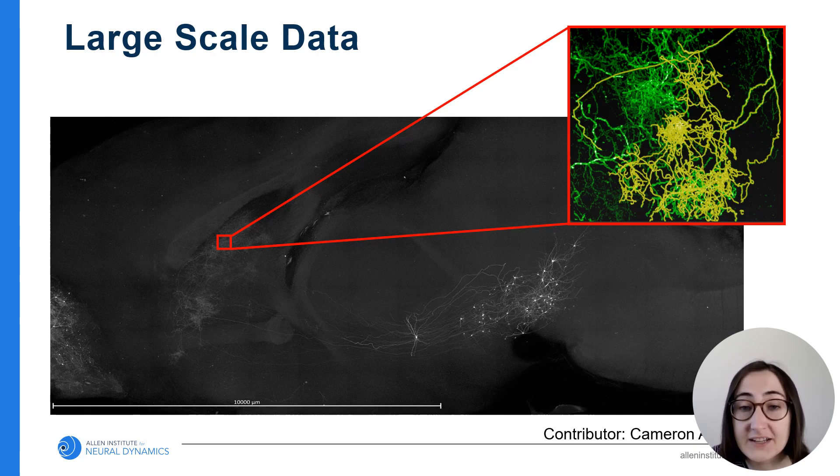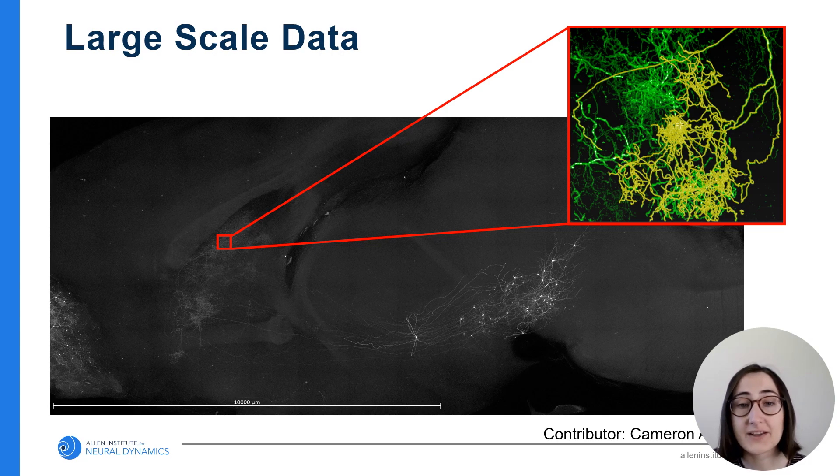Here you can see a single neuron highlighted in yellow. This neuron was manually traced and took about 40 hours. Trying to trace neurons in the mouse brain manually is too time consuming, so we need to rely on algorithms that can automate the neuron segmentation process.